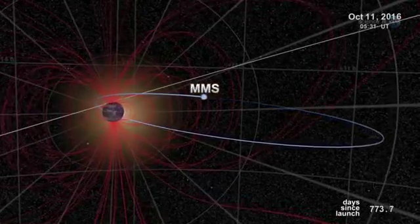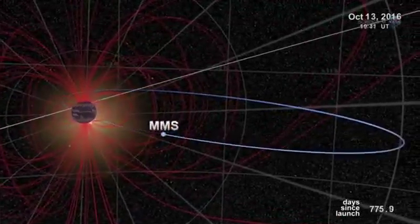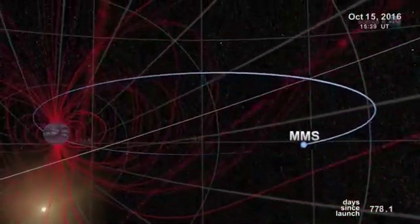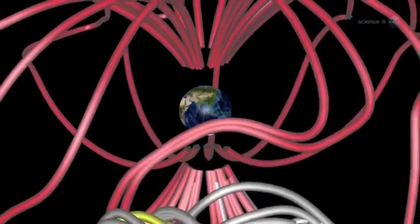Magnetic portals are invisible, unstable, and elusive. They open and close without warning, and there are no signposts to guide us in, notes Scudder. Actually, there are signposts, and Scudder has found them.